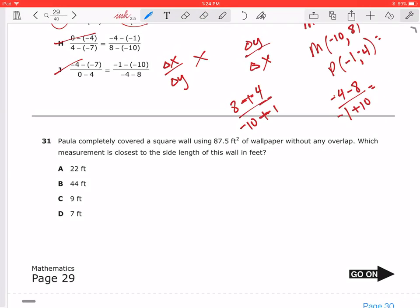Okay, so this one at first glance may seem a little complicated. It says Paula completely covered a square wall using 87.5 square feet of wallpaper without any overlap. And then it says, which measurement is closest to the side length of this wall in feet?